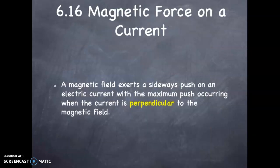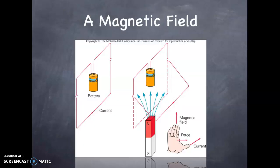A magnetic field exerts a sideways push on an electrical current, with a maximum push when the current is perpendicular to the magnetic field. Here's an illustration of that phenomenon.